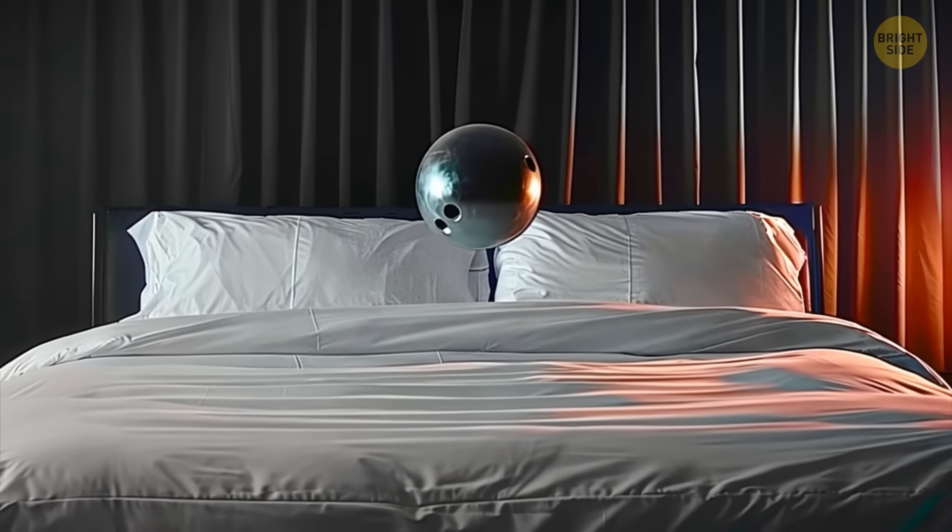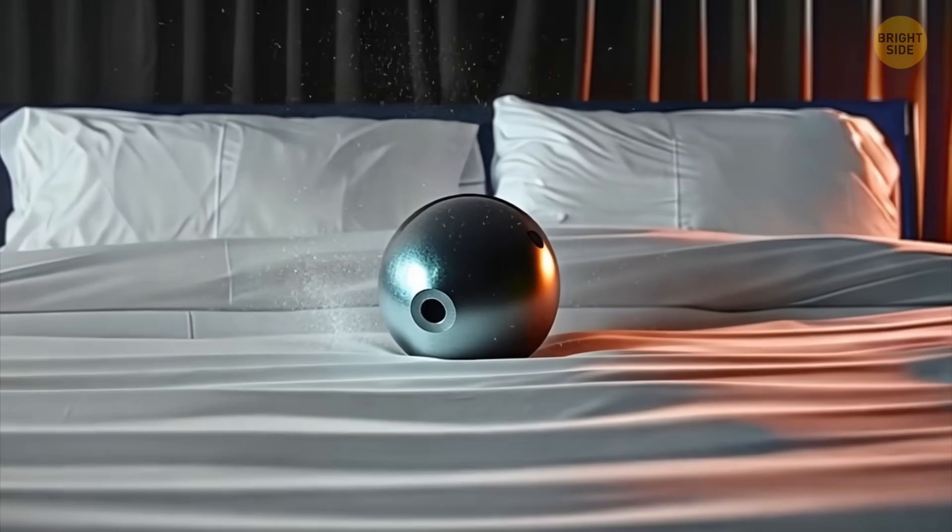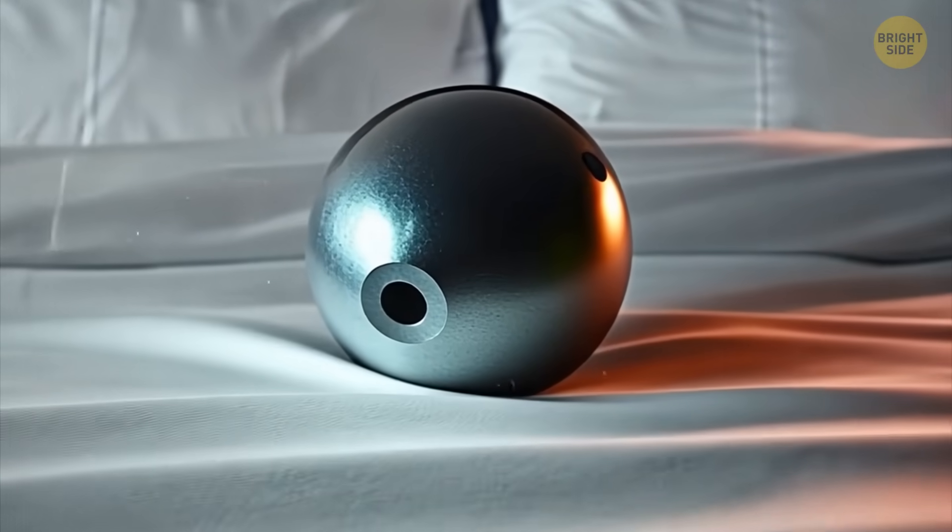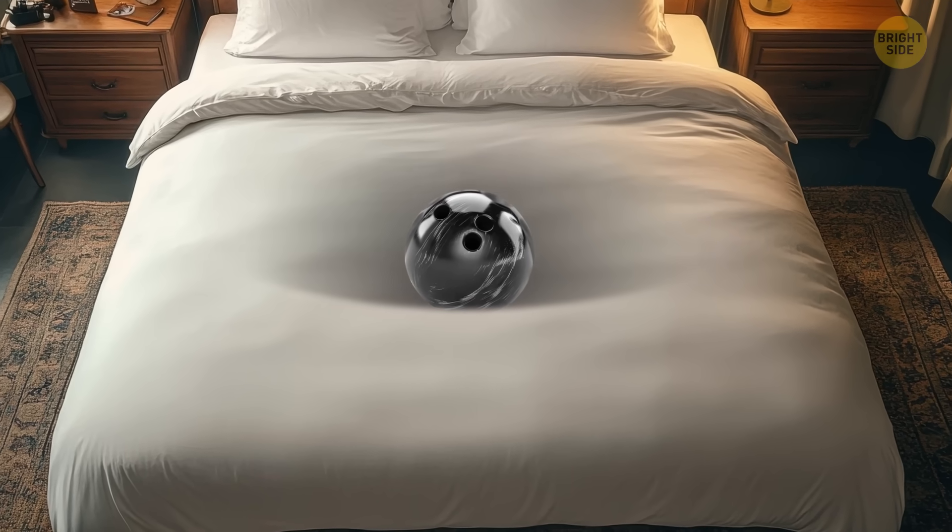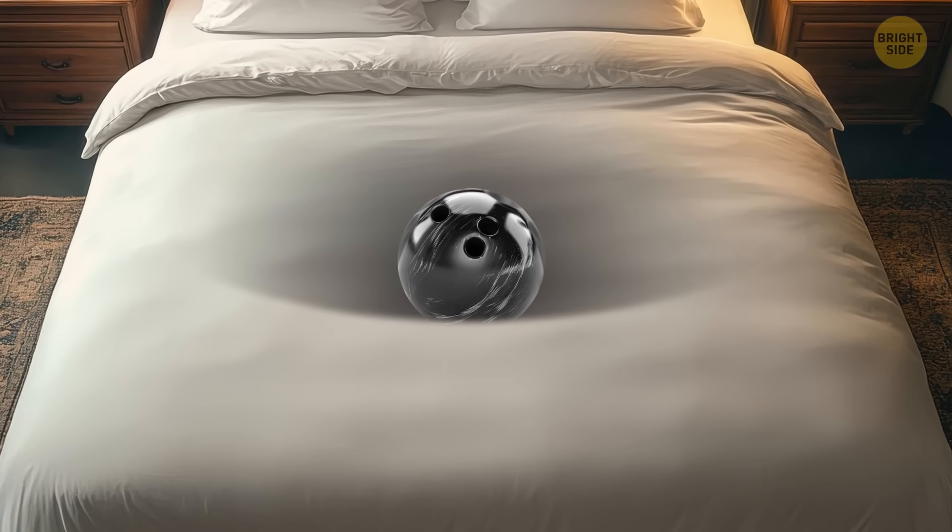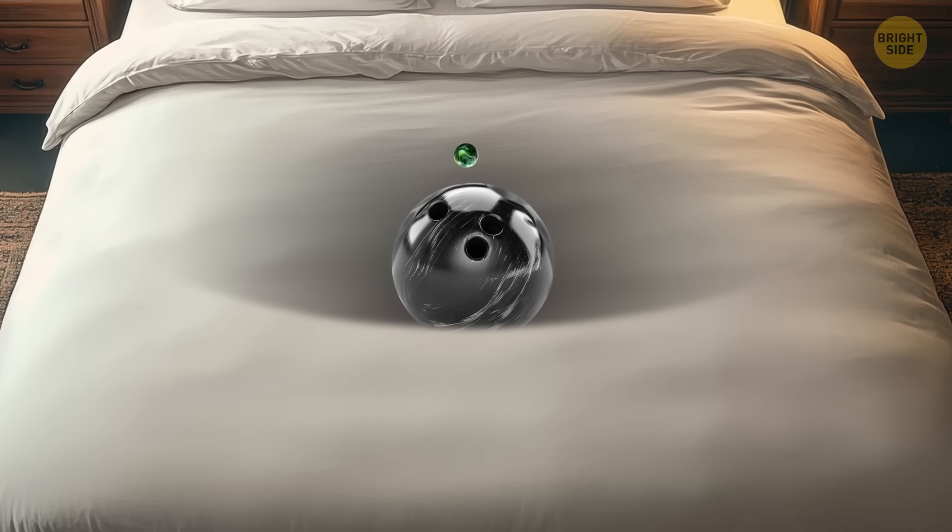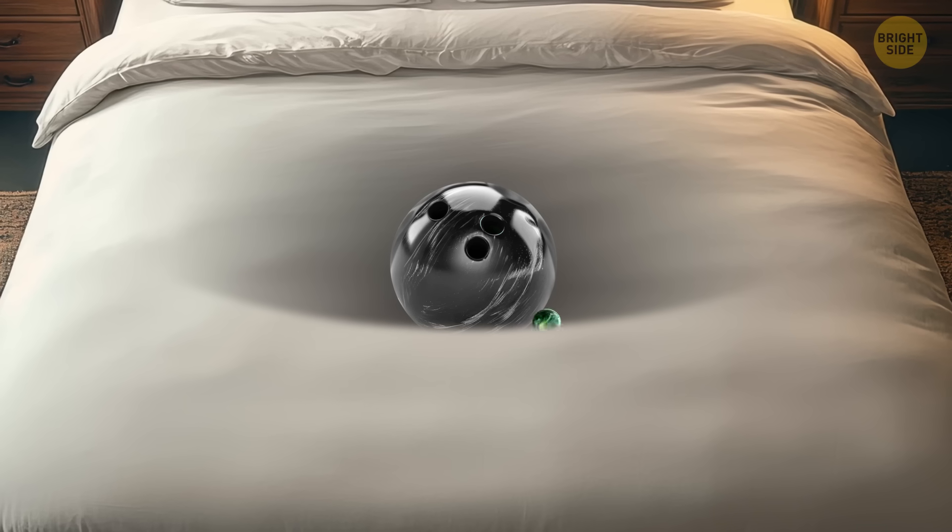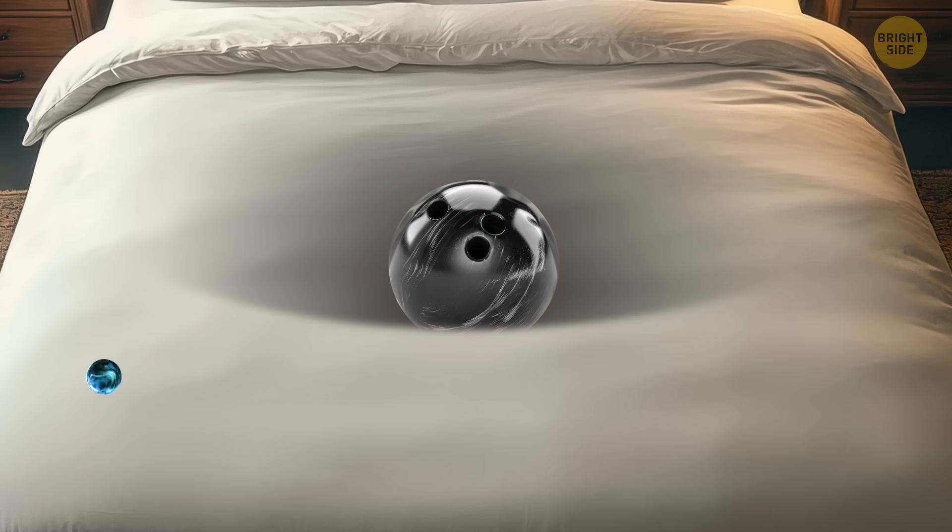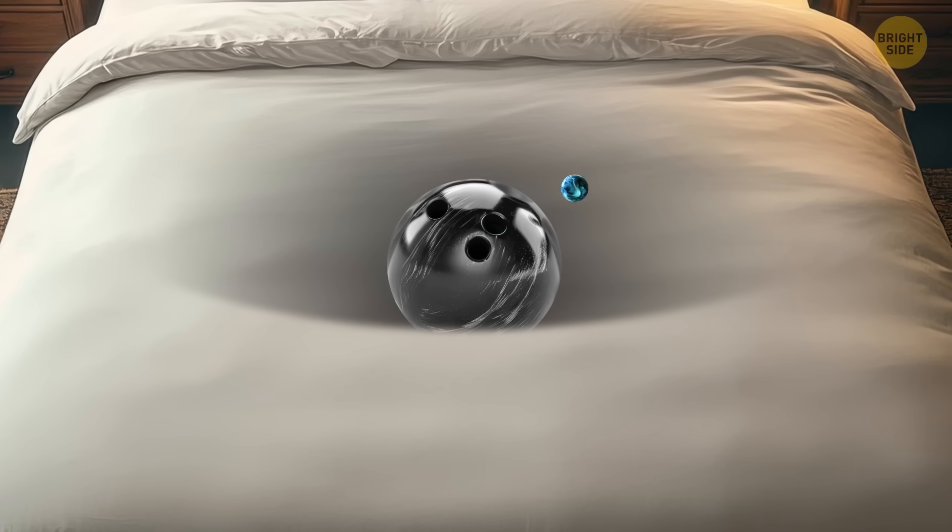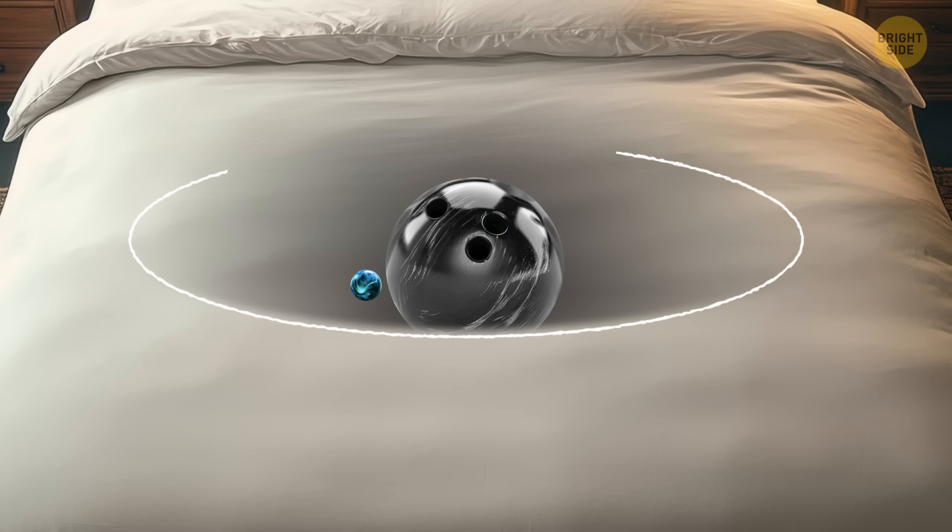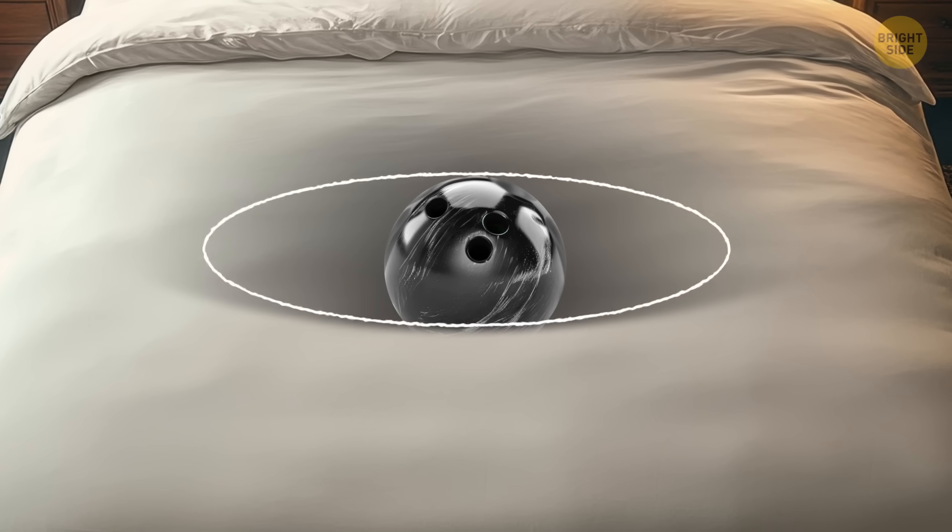Let's say you toss a heavy ball, like a bowling ball, onto the middle of your bed. What happens to the sheets? They dip. They stretch and sag around the ball. Now, if you roll a smaller ball, like a marble, across the bed, it doesn't move in a straight line anymore. Instead, it starts circling the heavy ball, rolling closer and closer as if the heavy ball is pulling it in.